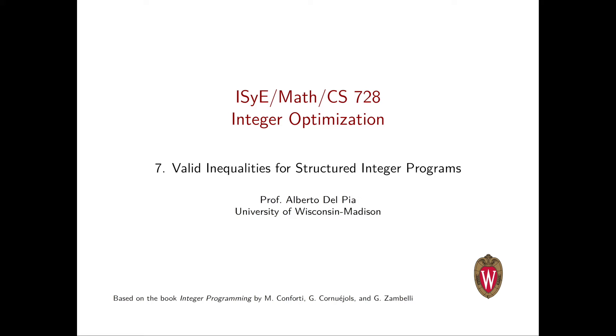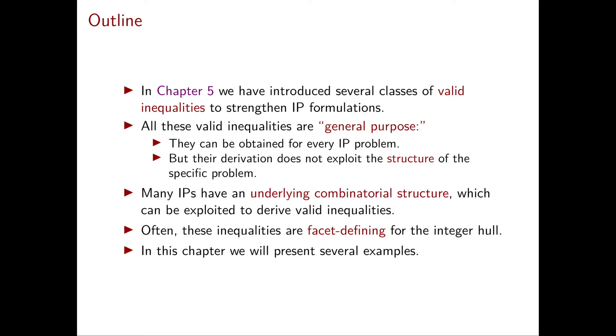Chapter 7 is about valid inequalities for structured integer programs. In Chapter 5, we saw how to derive several classes of valid inequalities for integer programming problems. All the inequalities we've seen are called general purpose.